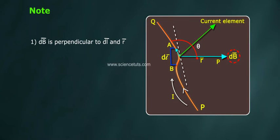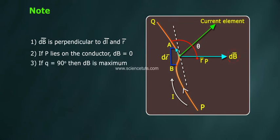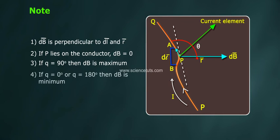Note: 1. dB bar is perpendicular to DL bar and R bar. 2. If P lies on the conductor, dB equals 0. 3. If theta equals 90 degrees then dB is maximum. 4. If theta equals 0 degrees or theta equals 180 degrees then dB is minimum.